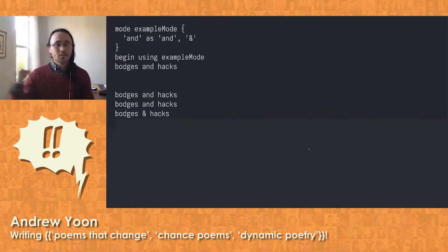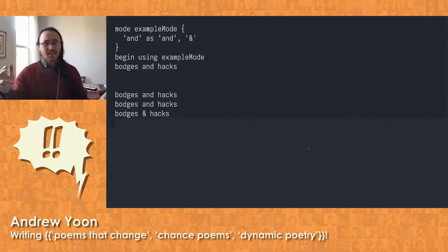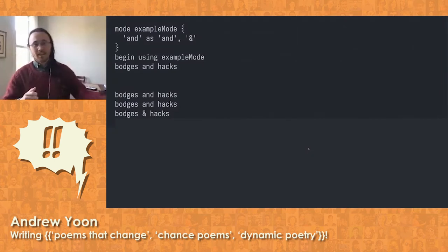We can also apply rules over larger swaths of text. So in this case, we're taking the word and, and we're looking for it everywhere. And every time we encounter that, we might use the word and, or we might insert an ampersand instead.